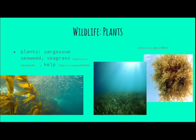Sargasso seaweed can be found in the Atlantic Ocean. Many camouflaged small animals such as shrimp and crabs live amongst Sargasso seaweed. Manatees and green sea turtles eat sea grass. Many invertebrates such as snails and sea urchins eat fish.